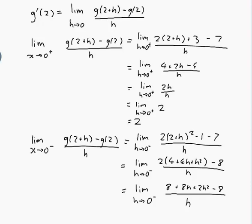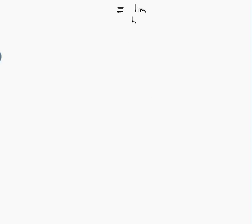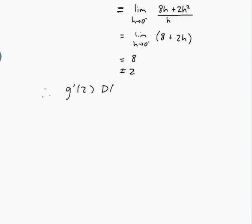Continuing on a new page: the limit as h approaches 0 from below of 8h plus 2h squared over h, which is the limit as h approaches 0 from below of 8 plus 2h. Substituting h equals 0 gives 8, which is not equal to 2 — the result from the right-hand side. Therefore g'(2) does not exist, because the two sides of the limit are not equal.